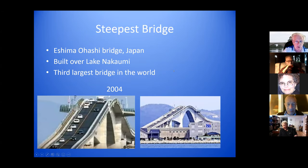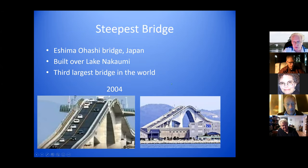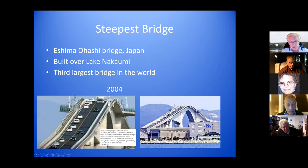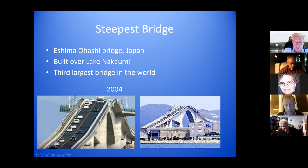This is the steepest bridge in the world, built over Lake Nakaumi in Japan. It's also the third largest bridge in the world. There are lots of pictures of this bridge where the roadway almost looks vertical, but this picture shows it's steep — but not that steep. It is still the steepest in the world.